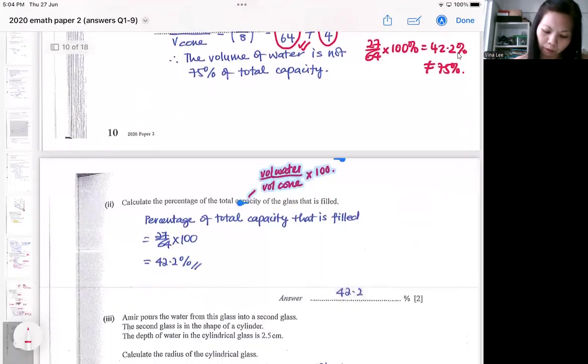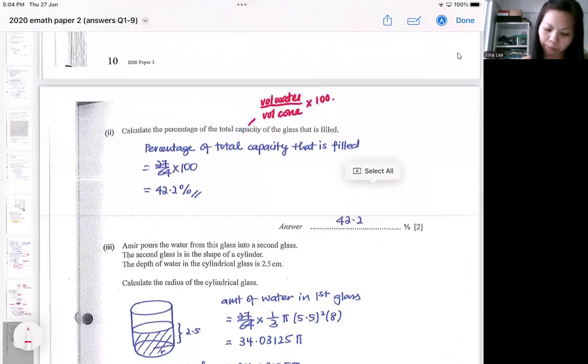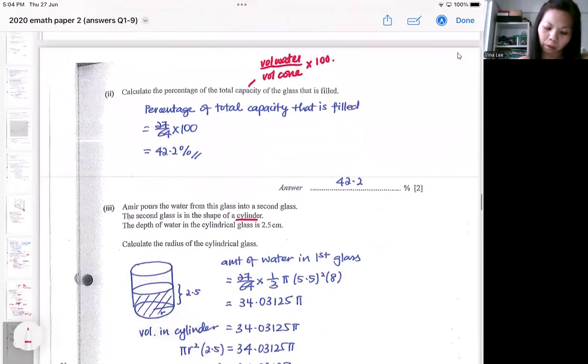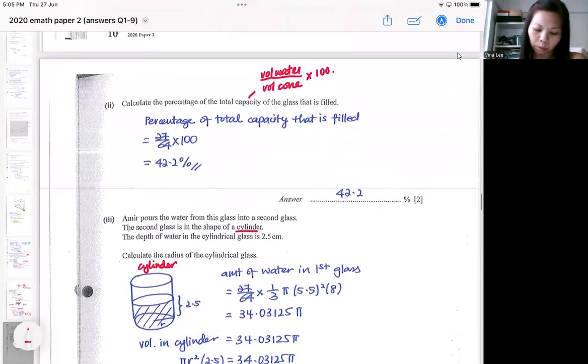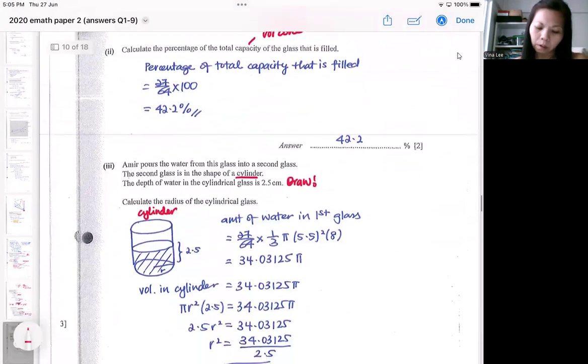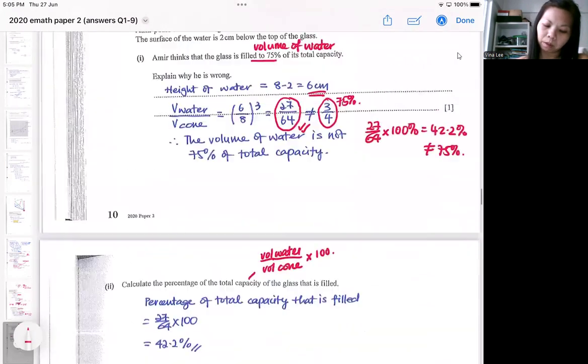The subsequent part is also not difficult, but some of you might not have the patience to read. So basically, Amira just pours the water into a second glass, which is in a form of a cylinder. So I draw the cylinder first. And then the water fills up the cylinder to a height of 2.5. So it's easier if you draw to visualize. That means the same amount of water here. So the amount of water that is here, when it's being poured into the cylinder, it fills up a height of 2.5.